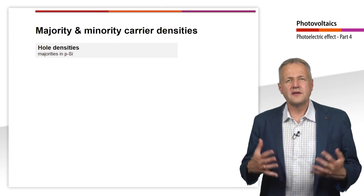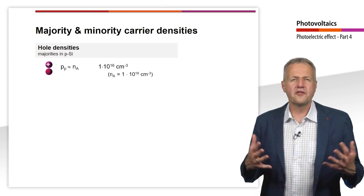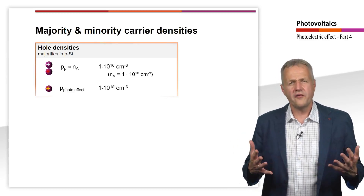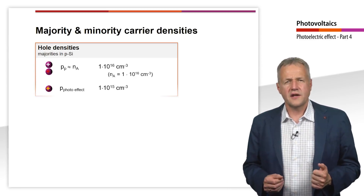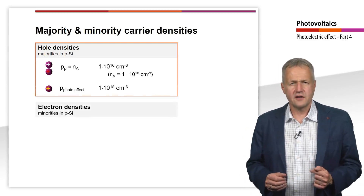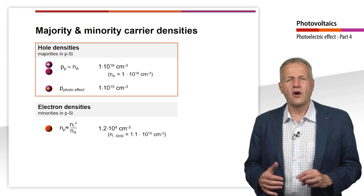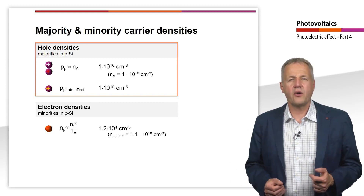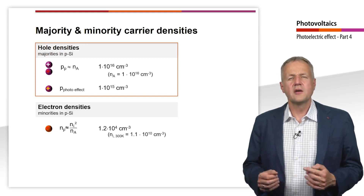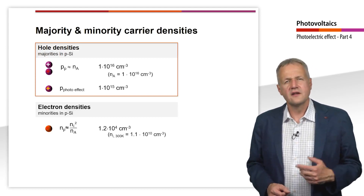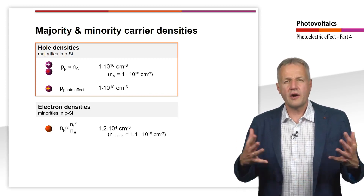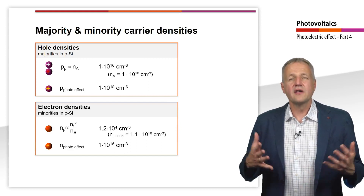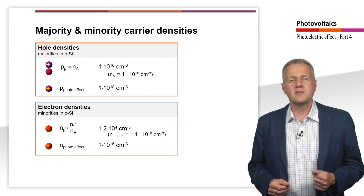In p-silicon, the holes are the majority carriers with a typical concentration of 10¹⁶ per cubic centimeter. The concentration of holes produced by the incident light is 10¹⁵ per cubic centimeter. The electrons are the minority carriers in p-silicon. Since the product of hole and electron density always equals the intrinsic carrier concentration squared, and Ni is 1.1 × 10¹⁰ per cubic centimeter at 300 K in crystalline silicon, the minority carrier concentration in the p-region is around 10⁴ per cubic centimeter. The concentration of electrons generated by incident light, however, is 10¹⁵ per cubic centimeter.